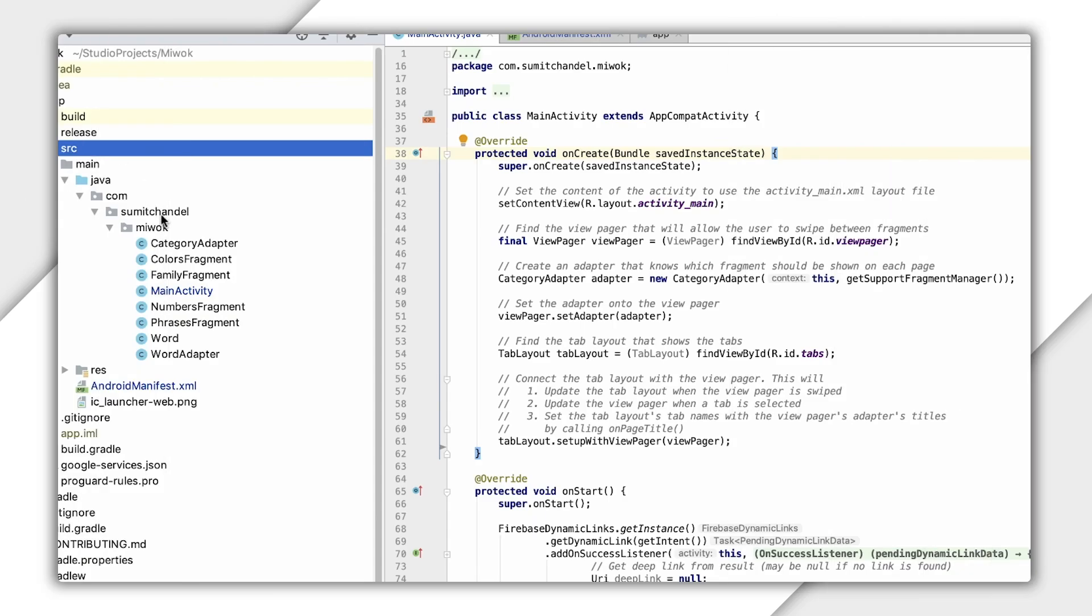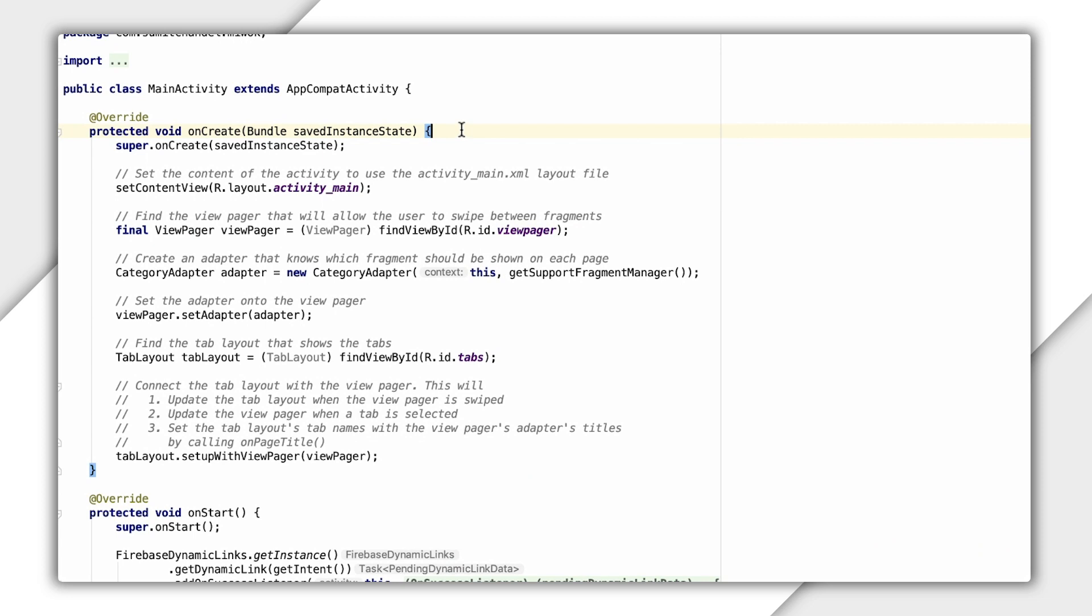OK. So at this point, we have the mapping for which dynamic links will launch which activities based on their deep link URL. Now let's take a look at actually extracting that link within an activity. For my example, I only have one activity receiving Firebase dynamic links, my main activity. So I'll look at adding code to receive and handle the dynamic link here. The way I can get the Firebase dynamic link is by making a call to the Firebase dynamic link libraries, like so within my onCreate method.